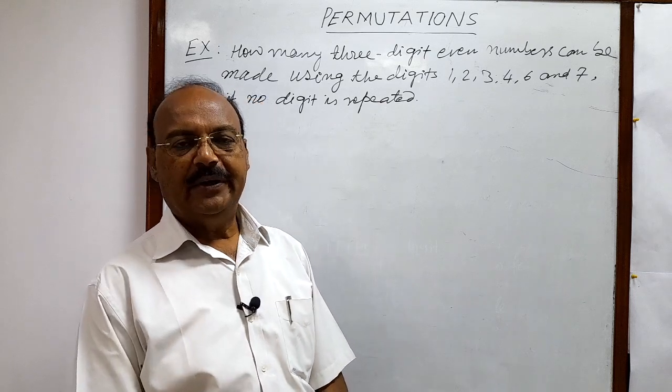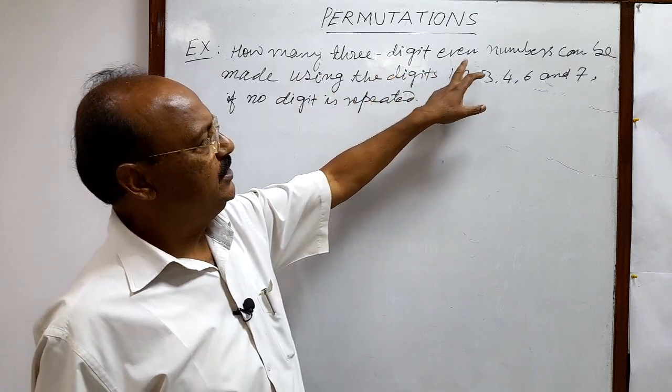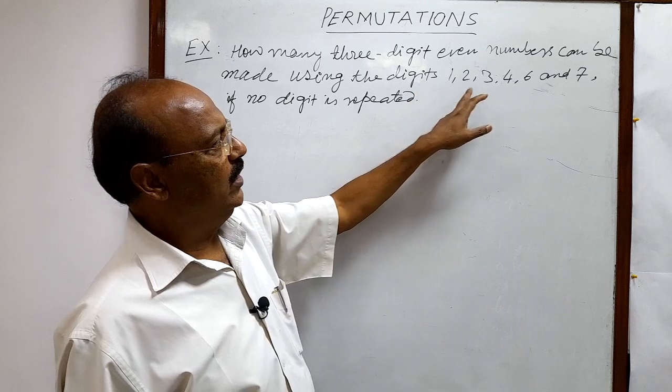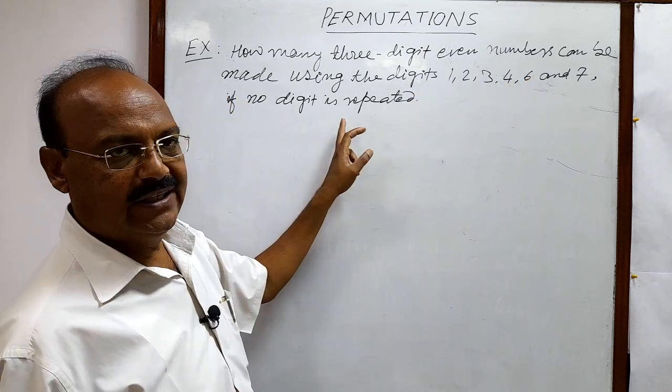Here you will see a problem from the topic permutations. Question is, how many three digit even numbers can be made using the digits 1, 2, 3, 4, 6 and 7 if no digit is repeated?